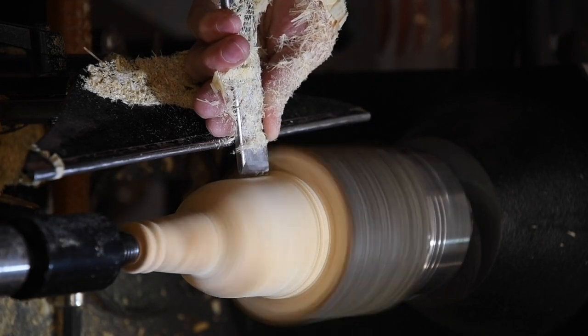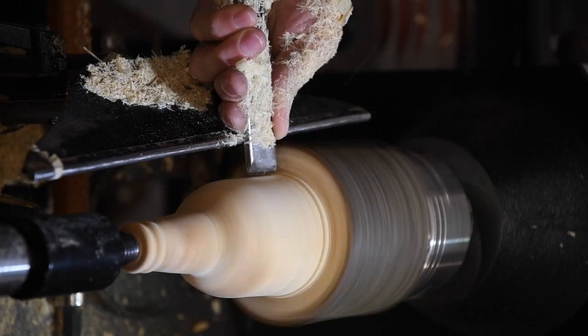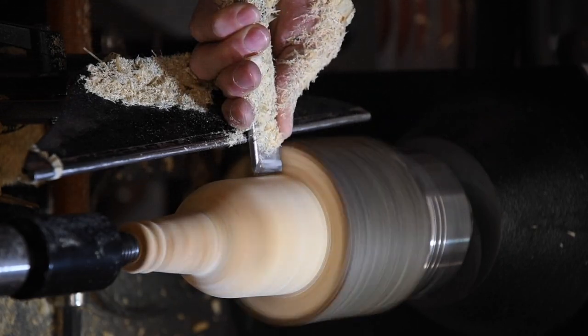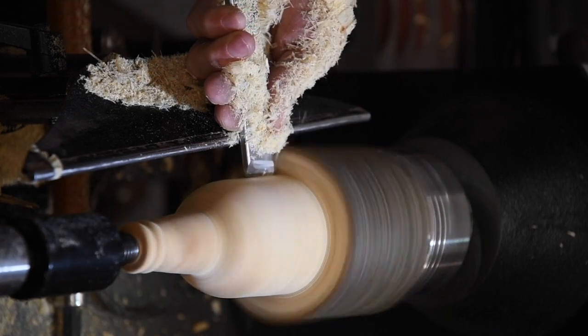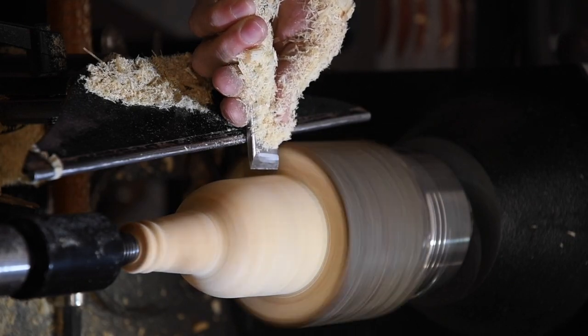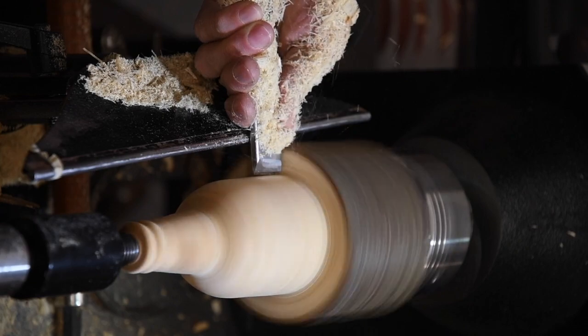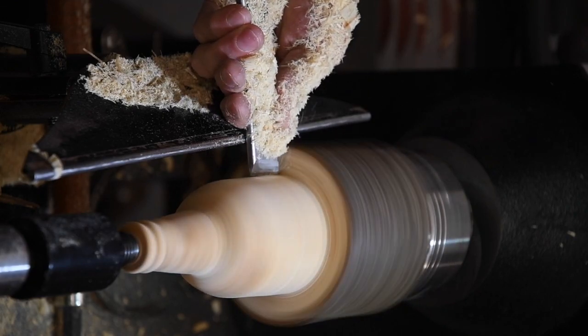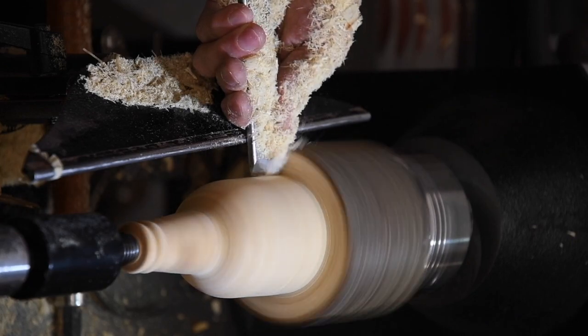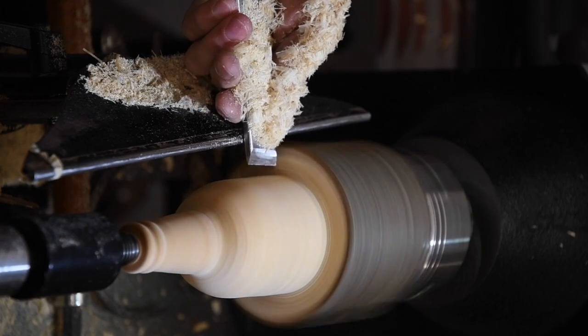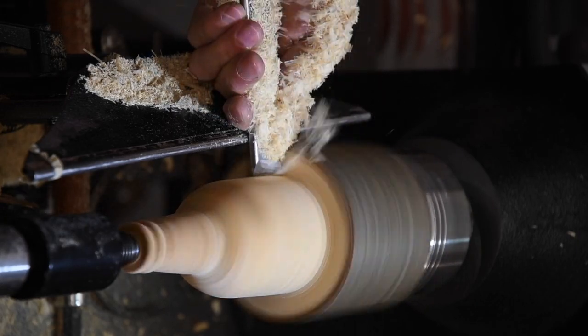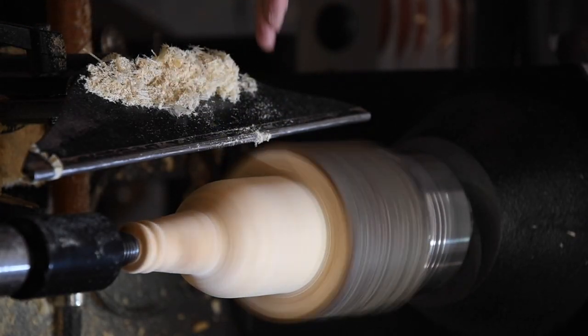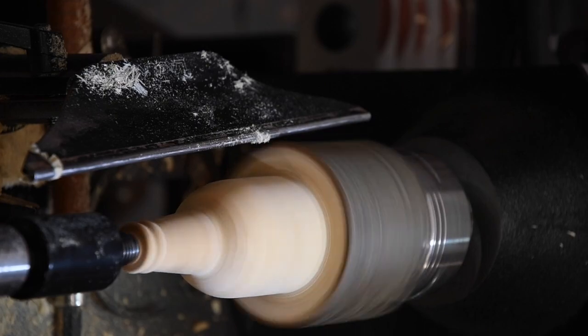Going back to the negative rake scraper. Blending it in is a little bit tricky - you can overdo it and then it just doesn't look natural.